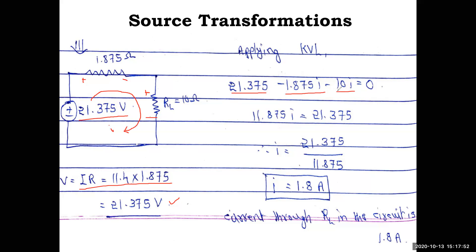Combining the resistance terms: 1.875 + 10 = 11.875. Rearranging: 11.875i = 21.375, so i = 21.375/11.875 = 1.8 amps. The current through the load resistance in this circuit is 1.8 A. We first converted voltage sources in series to current sources in parallel, combined them, then converted back to apply basic laws such as KVL and Ohm's law.